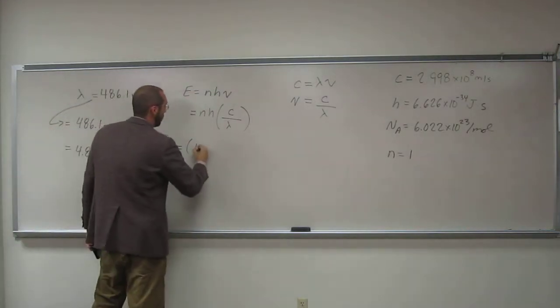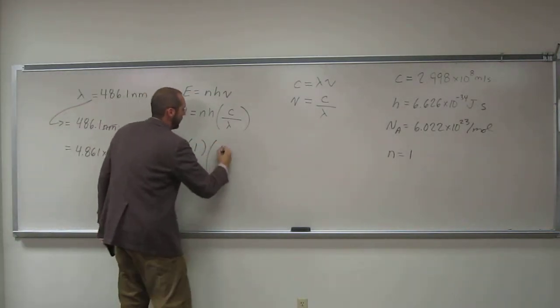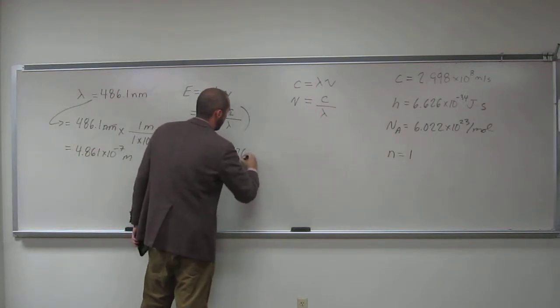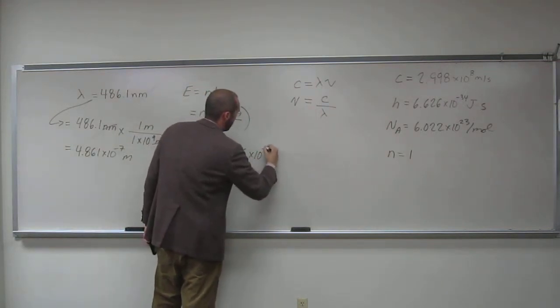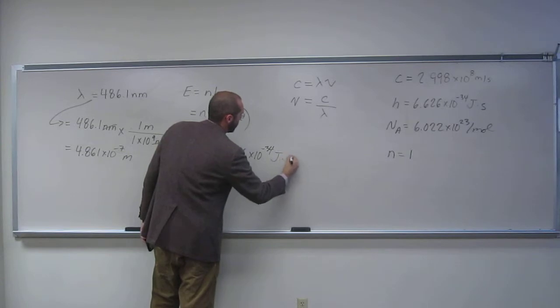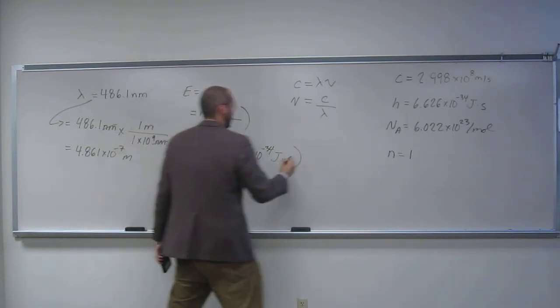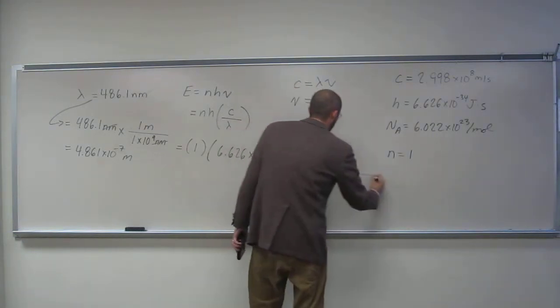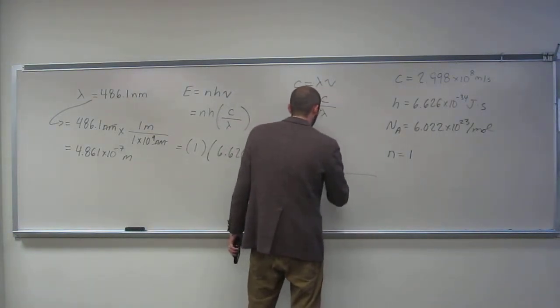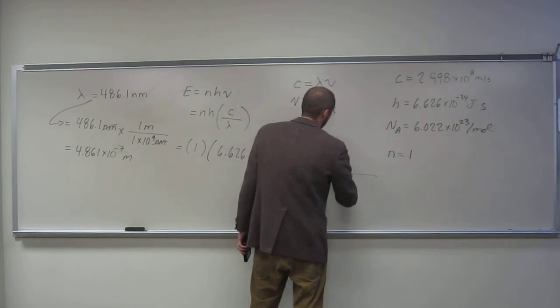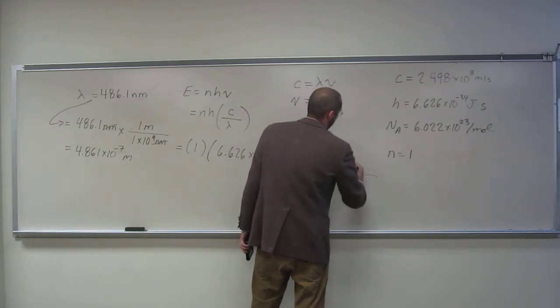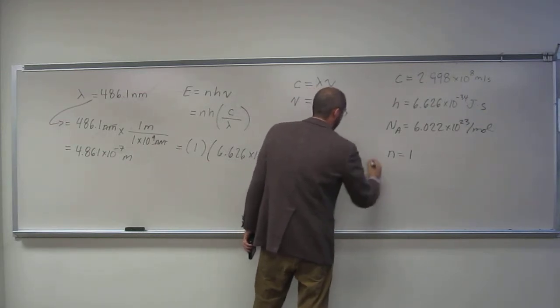n equals 1, H, 6.626 times 10 to the negative 34th joules seconds.